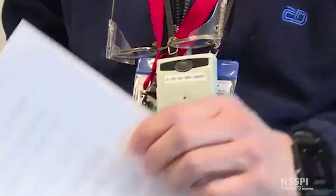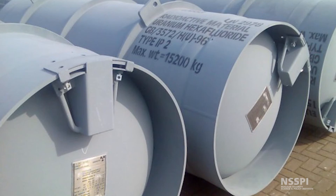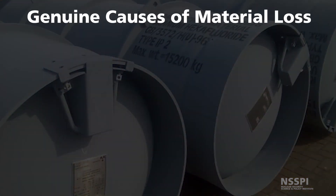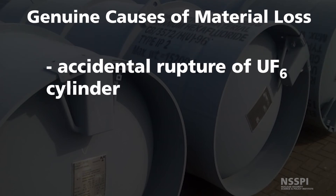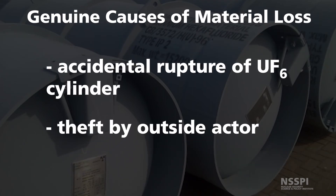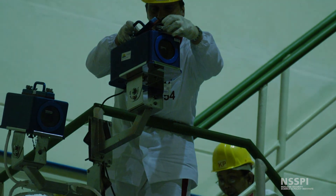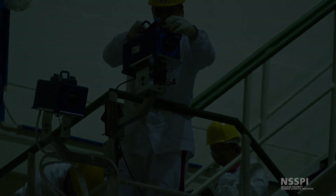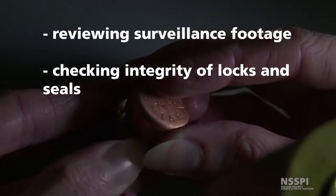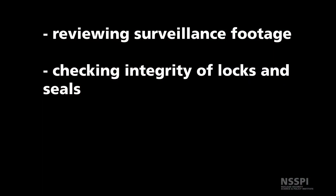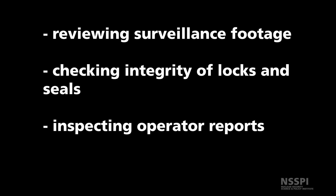Inspectors shall also verify records to detect a false report on loss of material. Loss of material can be genuine — for example, due to an accidental rupture of a cylinder or theft by outside actors. If such events are reported, the IAEA will use all available tools to verify the validity of the report, such as reviewing surveillance footage of the incident, checking the integrity of locks and seals, and inspecting operator records. In general, a material loss declaration would initiate an extensive and quite intrusive investigation of the facility and its operators, and could potentially result in a temporary or permanent shutdown of the facility.